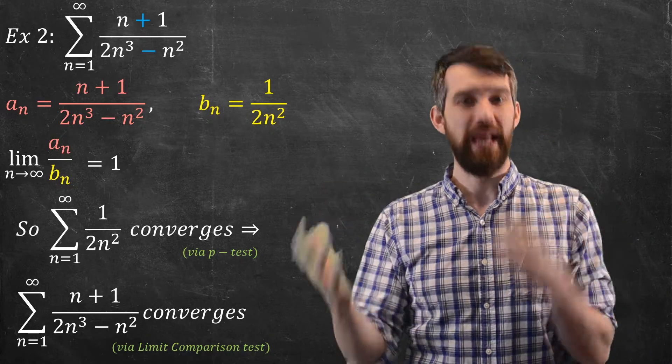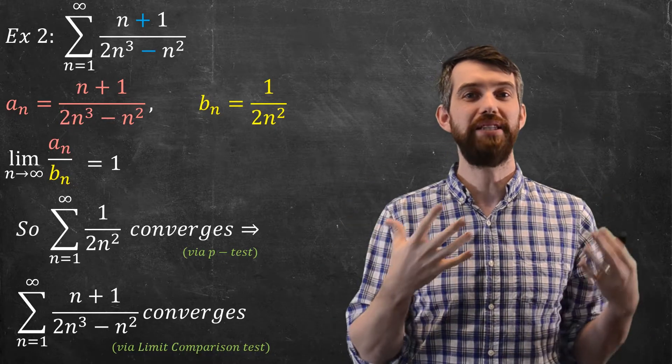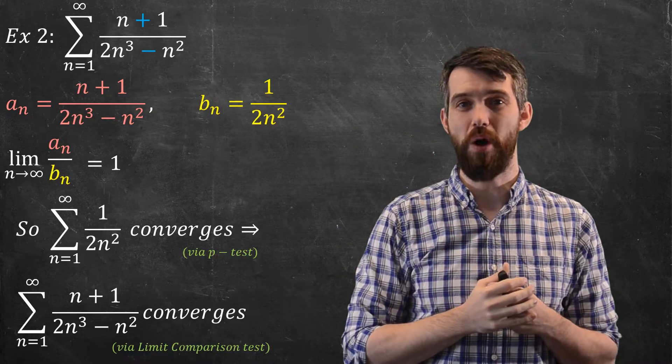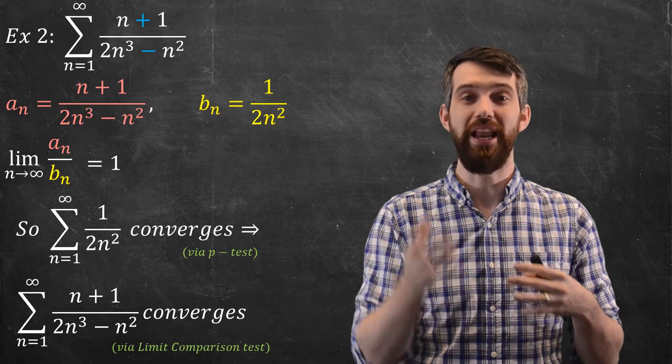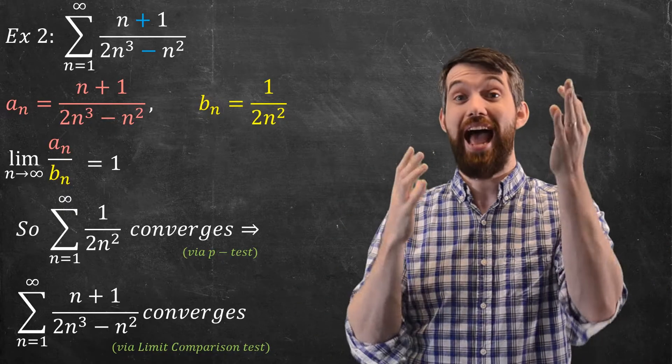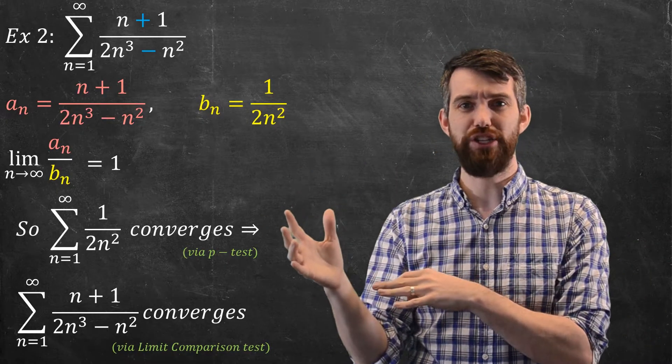So I really like the limit comparison test in particular because it now applies in scenarios where the comparison test fails, where you can't come up with some nice easy inequality, where it works in the wrong direction. In many of those scenarios, the limit comparison test can come in and actually solve whether you've got your convergence.